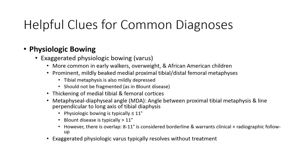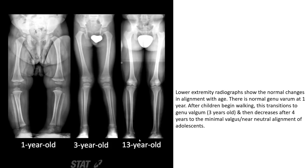However, there is overlap: 8 to 11 degrees is considered borderline and warrants clinical plus radiographic follow-up. Exaggerated physiologic bowing resolves without treatment. This is an example showing three types of bowing by age: the left image is one year old, the middle is three years old, and the right image is thirteen years old.